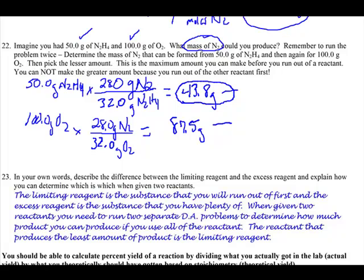If you try to even make 44 or 45 grams, you can't do it, because you only have 50 grams of this reactant. This only allows you to make that. If you try to make any more than this, you're not going to be able to, because you don't have enough of this stuff.